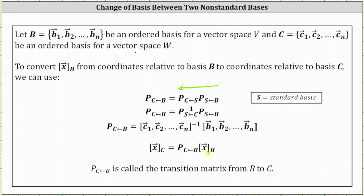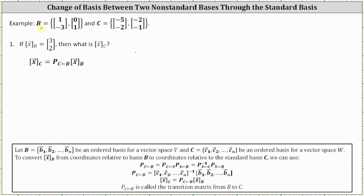Let's take a look at an example. We are given basis vectors in set B and basis vectors in set C. If the coordinates of vector X relative to basis B are [3, 2], then what are the coordinates of vector X relative to basis C? We know the coordinates of vector X relative to basis C equal the transition matrix from B to C times the coordinates of vector X relative to basis B, and the transition matrix from B to C equals the inverse of the matrix formed using the basis vectors from set C.